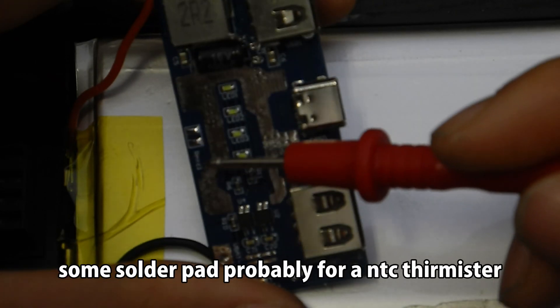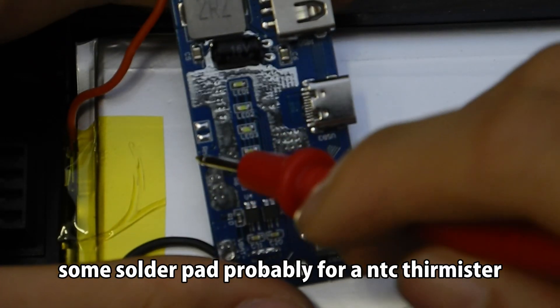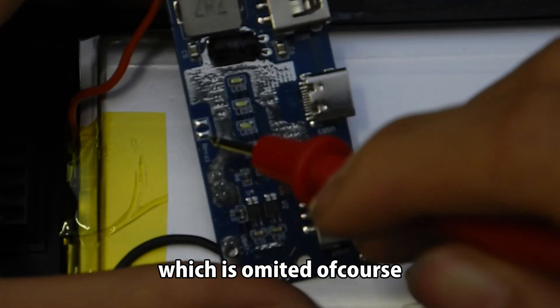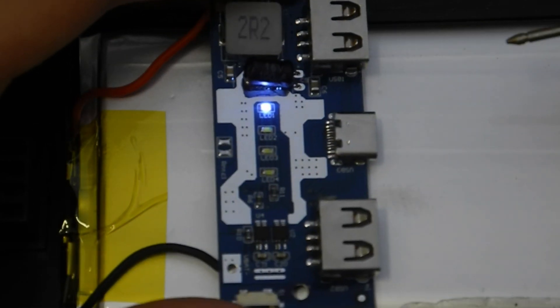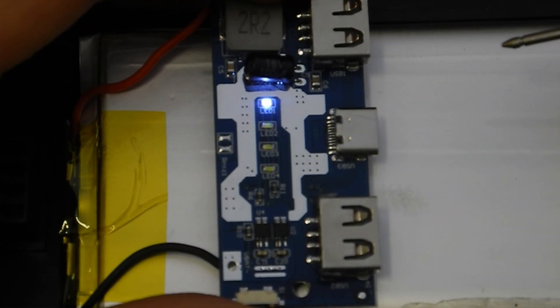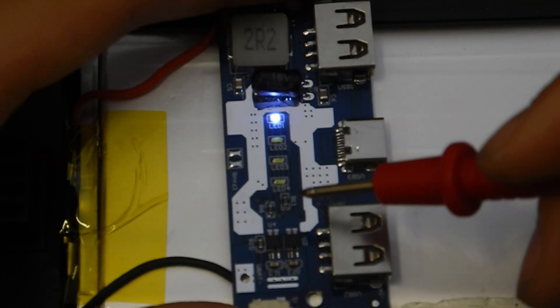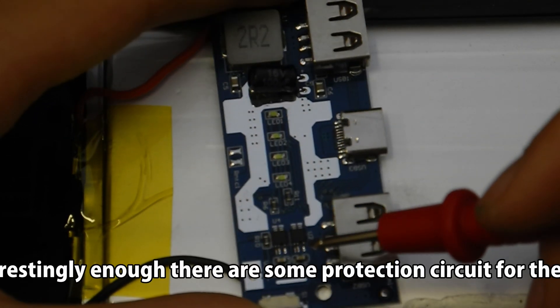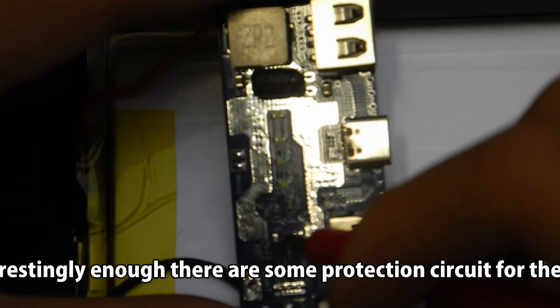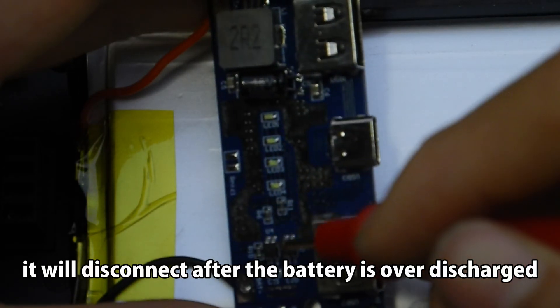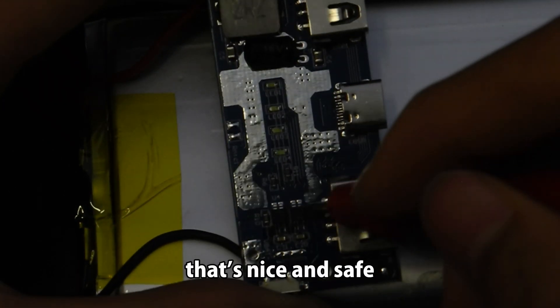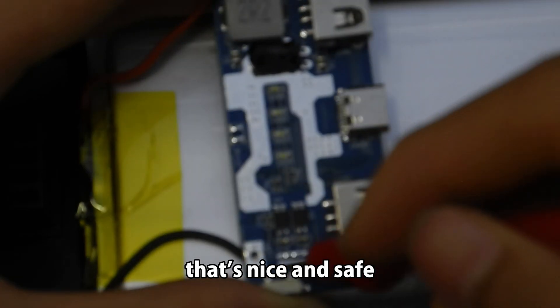Some solder pads probably for an NTC thermistor, which is omitted of course. But interestingly enough there is some protection circuit for the battery. It will disconnect after the battery is over discharged. That's nice and safe.